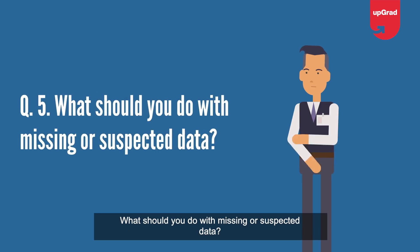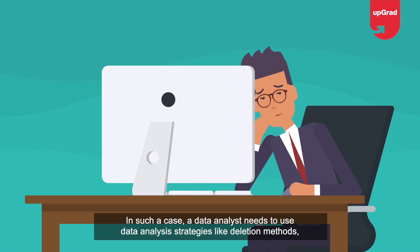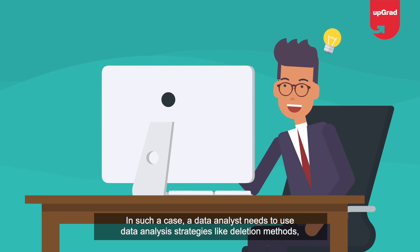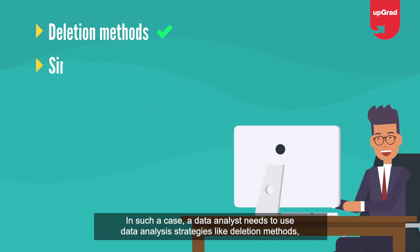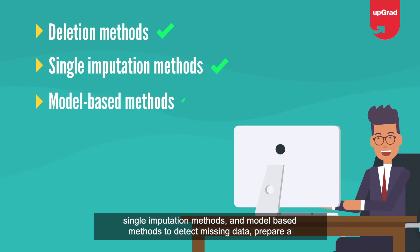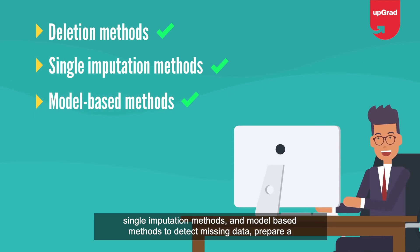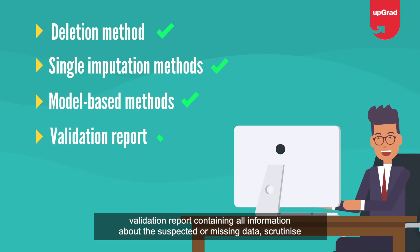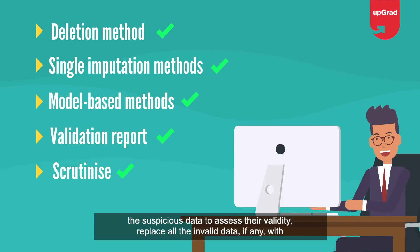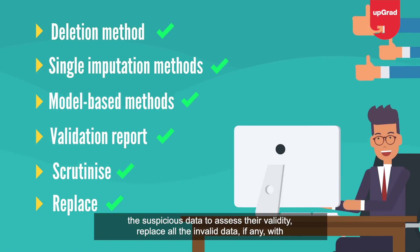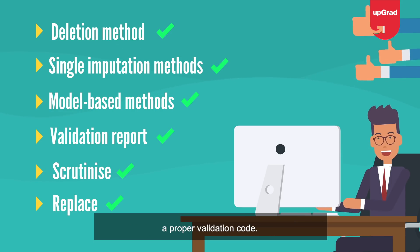What should you do with missing or suspected data? In such a case, a data analyst needs to use data analysis strategies like deletion methods, single imputation methods, and model-based methods to detect missing data. Prepare a validation report containing all information about the suspected or missing data. Scrutinize the suspicious data to assess their validity, and replace all the invalid data, if any, with a proper validation code.